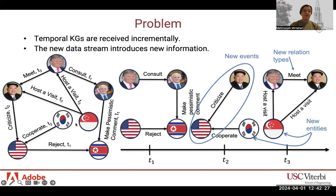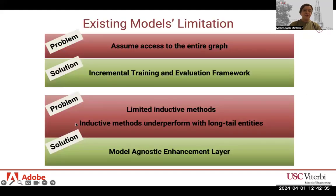In our work, we propose an incremental training and evaluation approach that takes this realistic setup into account. Moreover, most existing methods struggle with unseen entities and cannot perform link prediction in an inductive setup, where one or both sides of the link are not observed during training. Graph neural network-based methods are inductive and capable of handling such scenarios. However, they depend on local entity neighborhoods to obtain the representation, and this local neighborhood tends to be very sparse for new and long-tail entities.